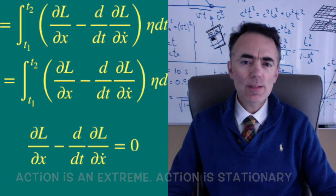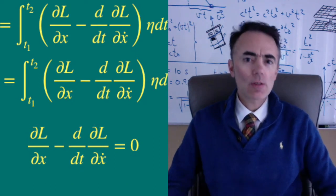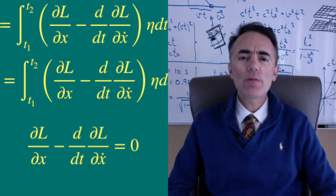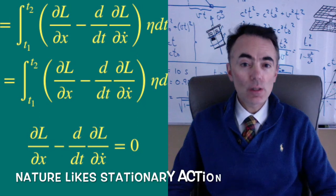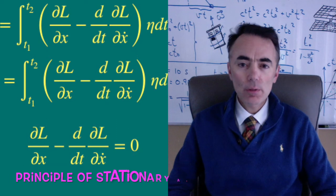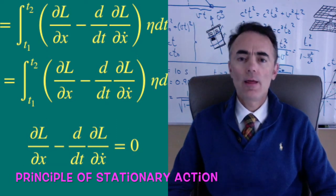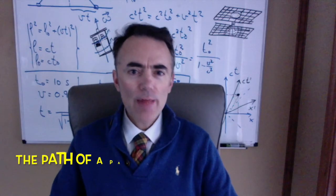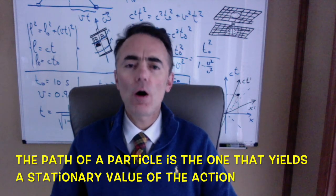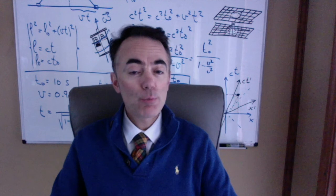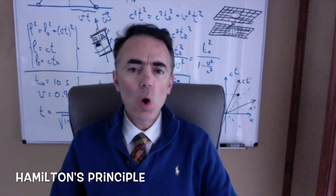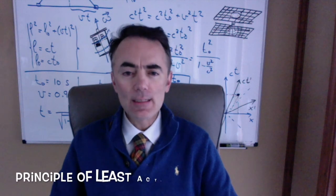So Euler-Lagrange's equations come from the fact that action is an extreme. They yield the same differential equations as F equals ma. So Newton's second law is equivalent to saying that nature likes stationary actions. And this takes us to the principle of stationary action, that says that the path of a particle is the one that yields the stationary value of the action.